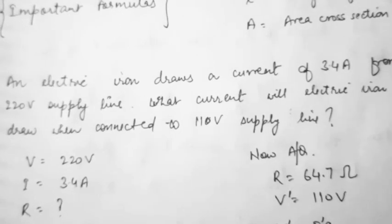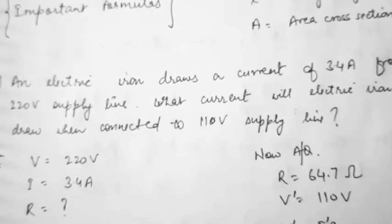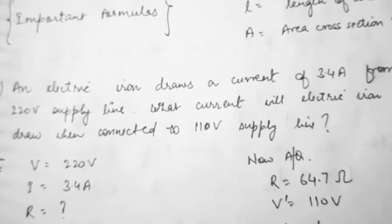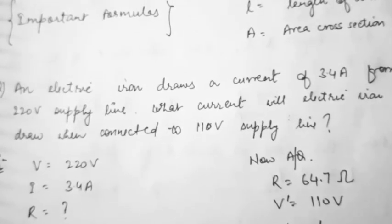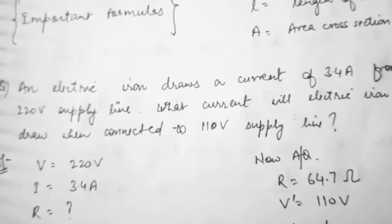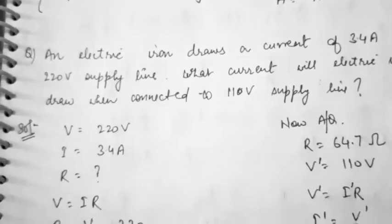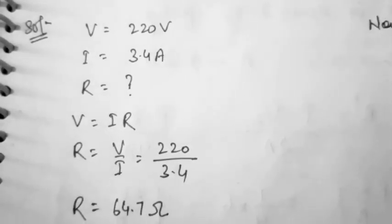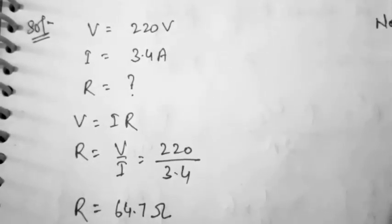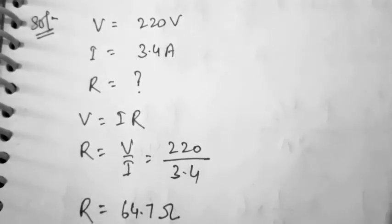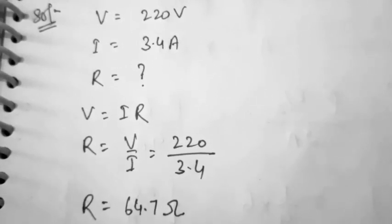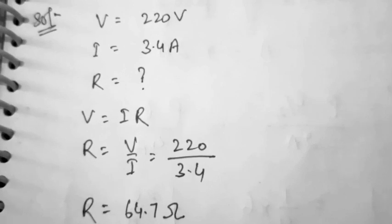Always remember that in India, the standard voltage supply is 220 volt. Since resistance R is constant in the formula V = IR, we can see the voltage is being halved, so the current will also be halved. For the first condition: V = 220 V, I = 3.4 A. From this we find R = V/I = 220/3.4 = 64.7 ohm.